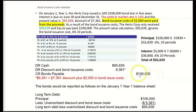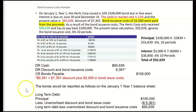The journal entry: debit Cash for $90,639, credit Bonds Payable $100,000, and we combine the discount and the bond issuance costs into one account, debiting it for $9,361. That's made up of $2,000 of bond issuance costs plus the bond discount of $7,361 ($100,000 minus $92,639). On the balance sheet right after issuance: long-term debt principal $100,000 minus unamortized discount and bond issuance costs of $9,361 = carrying amount of $90,639.